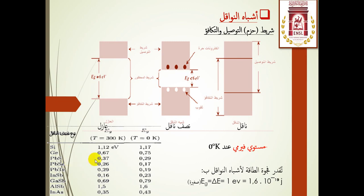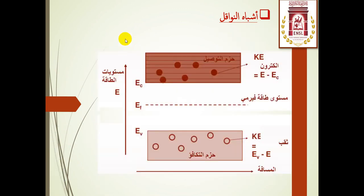مستوى فيرمي Fermi level هو المرجع الذي تقاس على أساسه مستويات الطاقة الأخرى، ويفصل بين المستويات المشغولة بالإلكترونات في حزمة التكافؤ والخالية منها. عند درجة ناقص 273.16 درجة مئوية، جميع المستويات تحت فيرمي بها إلكترونات وجميع المستويات فوق فيرمي تكون خالية من الإلكترونات. فطاقة فيرمي هي المسؤولة عن موصلية المواد.